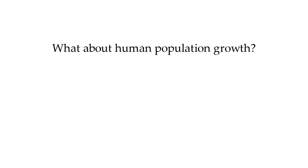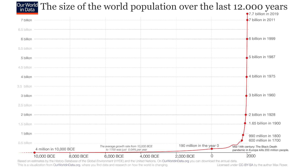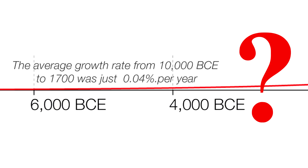But what about human population growth? Does it match up with these Bible-based timelines and the new genetic data? As it turns out, secular scientists and creationists generally agree on the basic events and population growth models for the past 3,000 years. But when dates get beyond this, there are discrepancies in their models.